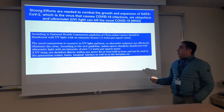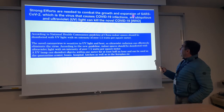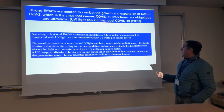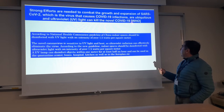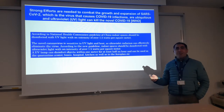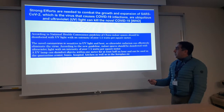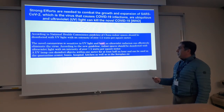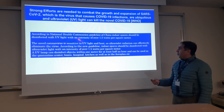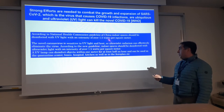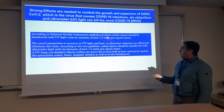We need strong efforts to combat the growth and expansion of the coronavirus, which is the virus that causes infections, and ultraviolet light can kill the coronavirus. According to the National Health Commissions of China, indoor spaces should be disinfected with UV light with intensity of 1.5 watts per square meter. But most UV light sources are based on mercury lamps, which are toxic.